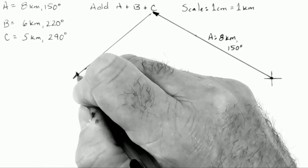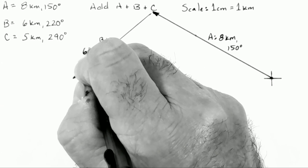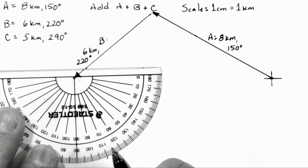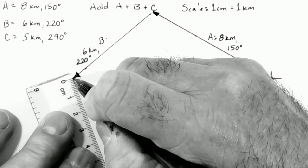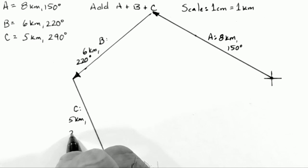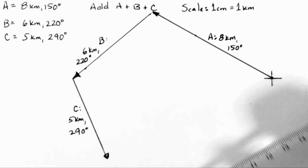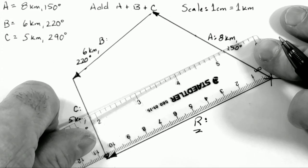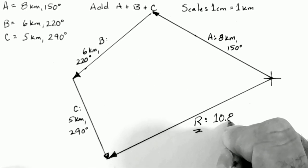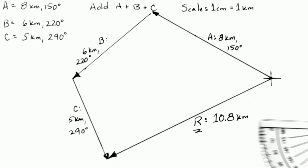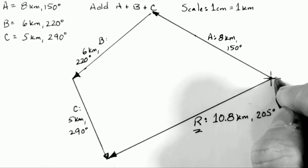I put an arrowhead on vector B and label its magnitude and direction. Vector C begins from the arrowhead of B at 290 degrees — 20 degrees east of south. Using a protractor, I mark a reference point and aim vector C towards it, five centimeters from the arrowhead of B. I put an arrowhead on vector C and label its magnitude and direction. I then draw the resultant from the tail of vector A to the arrowhead of vector C, label it R, and use a ruler to measure it at approximately 10.8 centimeters, converting to scale. Using a protractor, the direction is 25 degrees south of east — 205 degrees counterclockwise from east.